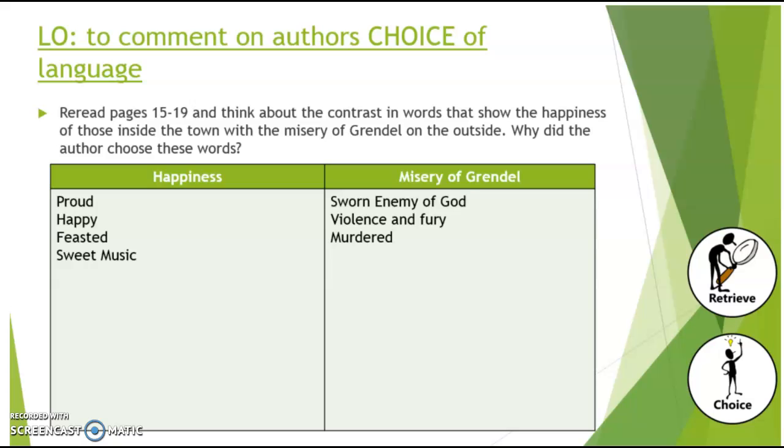So what I want you to do is to reread pages 15 to 19 of the book. I've attached the pages again for you, so pages 15 to 19, and think about the contrast in the words and the language that show the happiness of those inside the town compared to the misery of Grendel on the outside. And I want you to have a think about why the author chose those words.